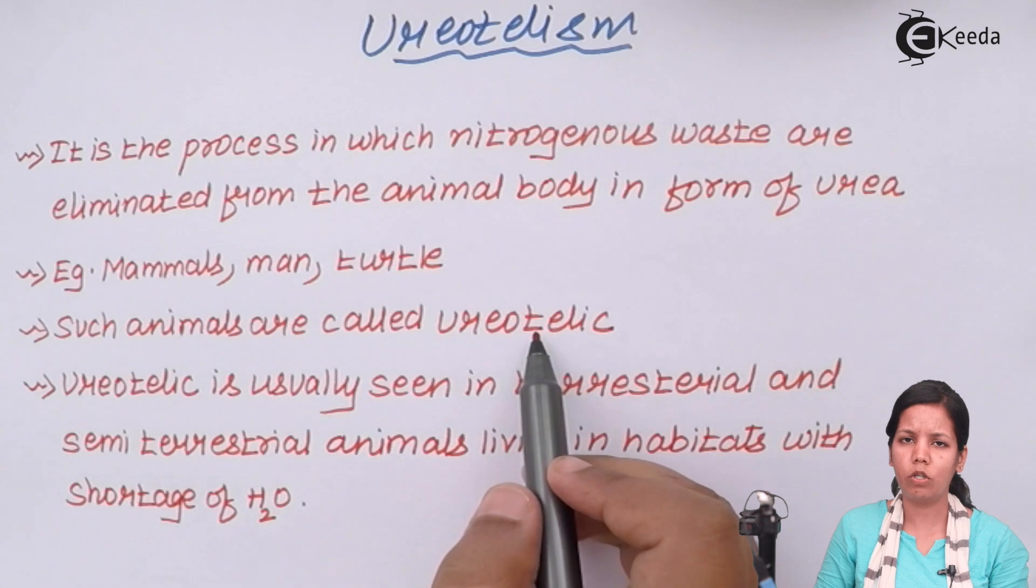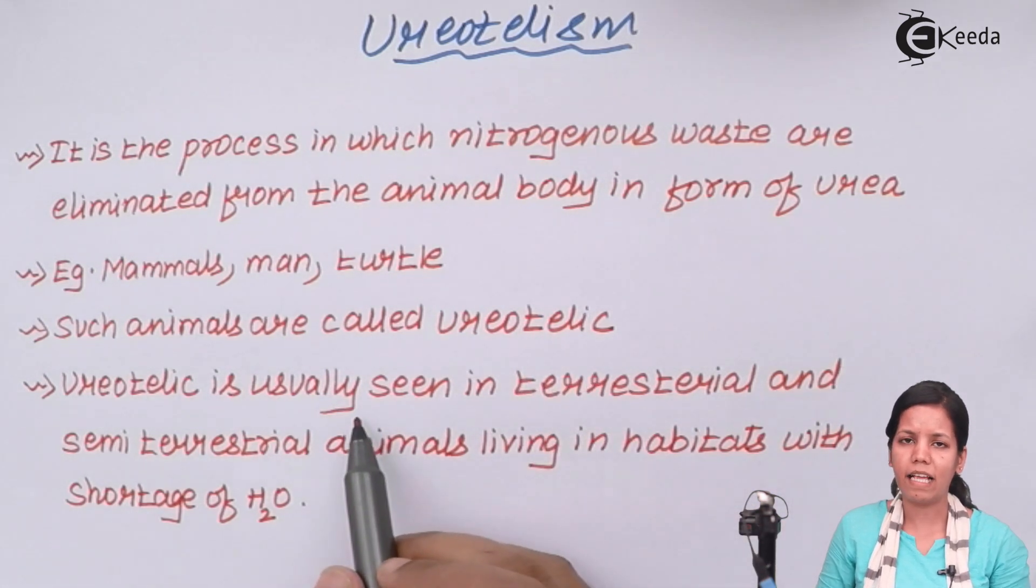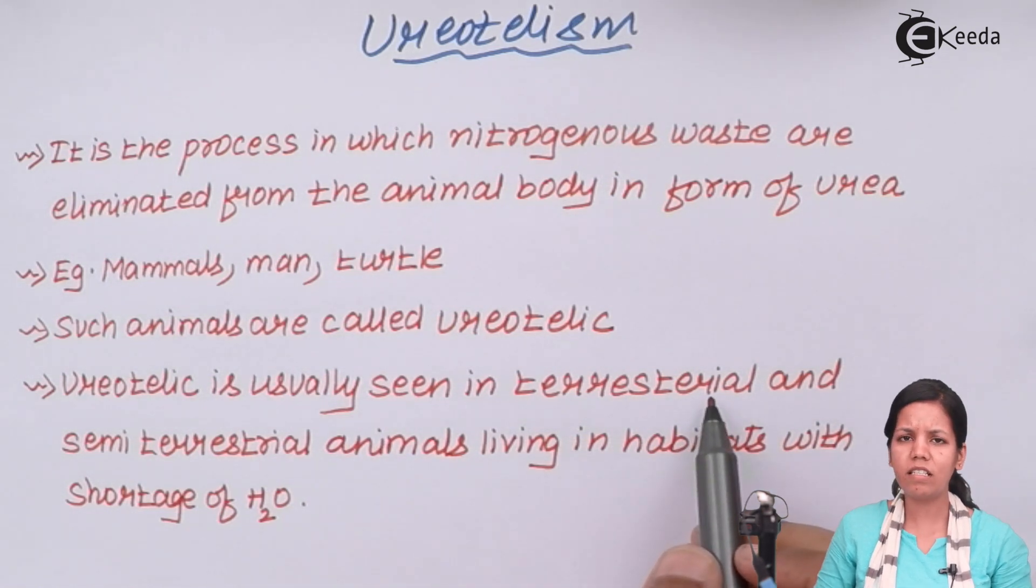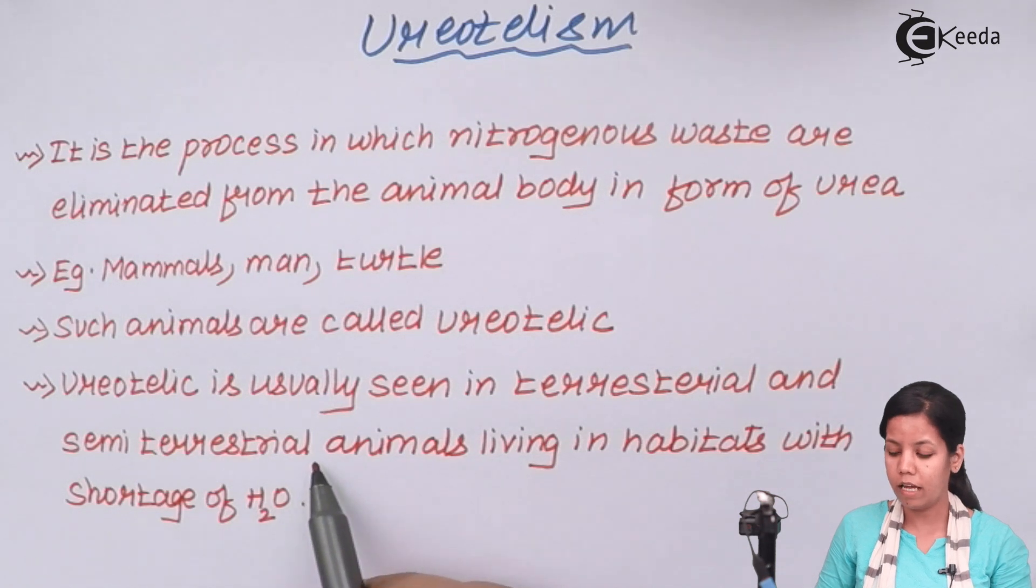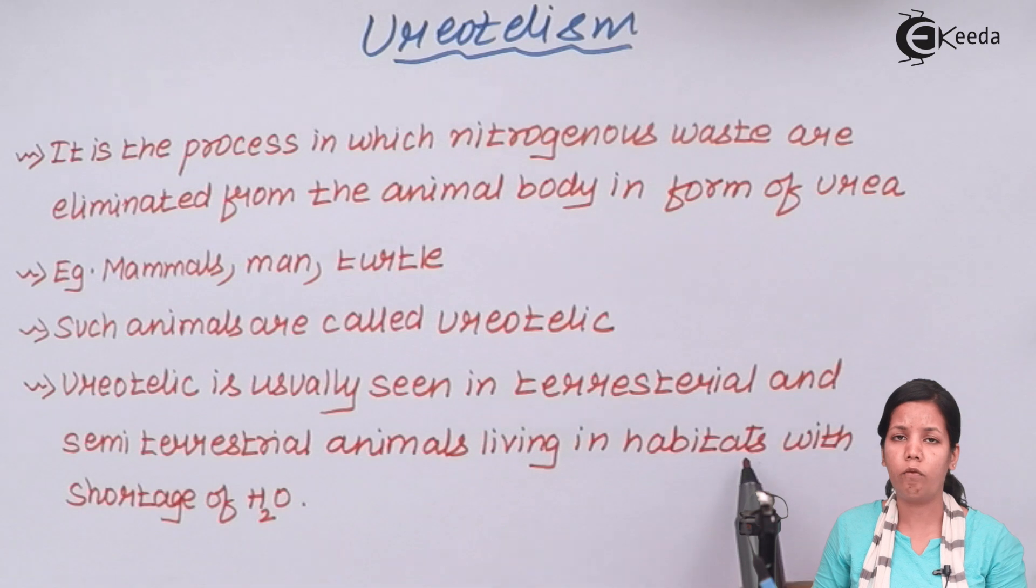This is the reason why these ureotelic organisms remove the waste product urea. Basically these animals are seen in terrestrial regions. Being in terrestrial or sometimes semi-terrestrial regions, these animals are living in habitats where there could be shortage of water or water available only for limited amount.